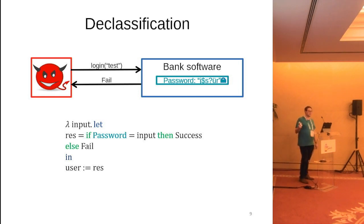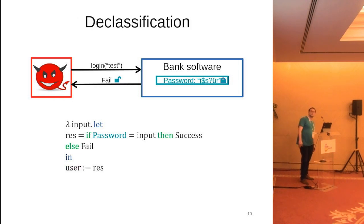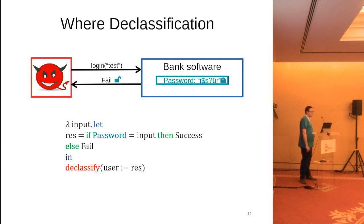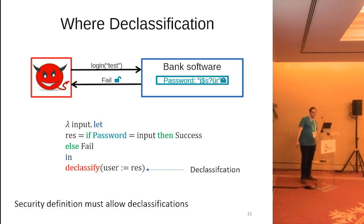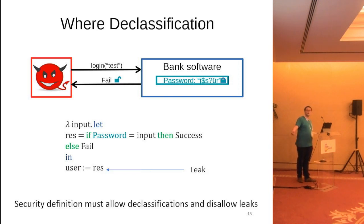So if we want to allow these kinds of programs where we necessarily have to reveal some secret information, we need something more sophisticated. We can allow the programmer to specify which information flows they intend to happen — for example, that this failure here is an intentional release of information. In our paper, we're mostly concerned with what's known as where declassification, which allows a programmer to specify where in the program the information should be revealed and where not. This might take the form of a declassified statement, where any information release within such a statement is a legitimate declassification, whereas releases outside of it are a leak.